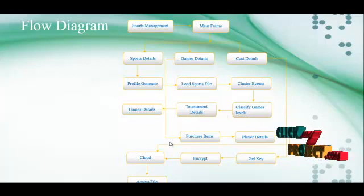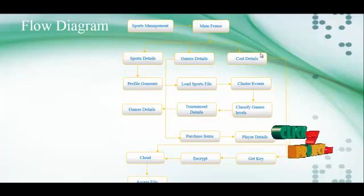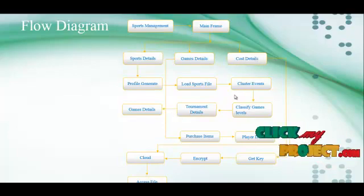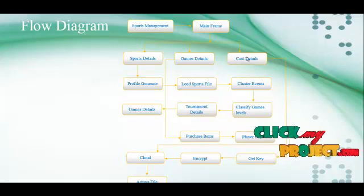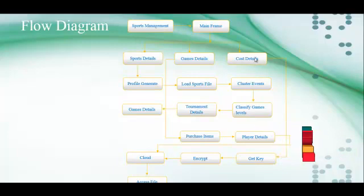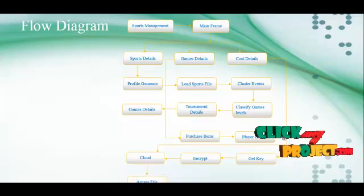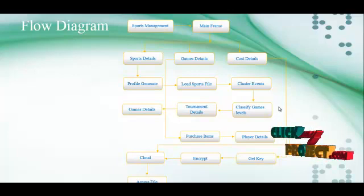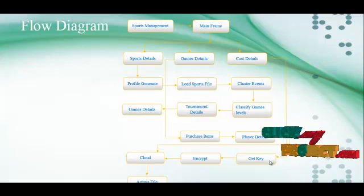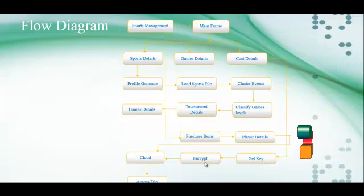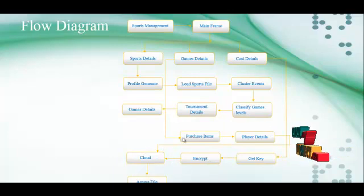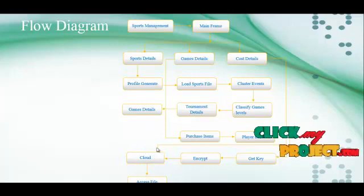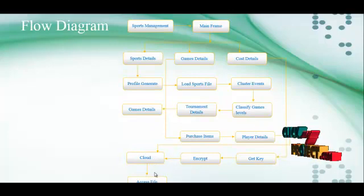From the game details we move to purchase items and player details stored on the cloud. The third part is cost details. We also use data mining, then go to cloud computing to get the data stored on the cloud server. Clicking cost details means selecting particular files — the input file is frequent data stored as a text file — which is then data-ciphered and stored on the cloud server for user access.